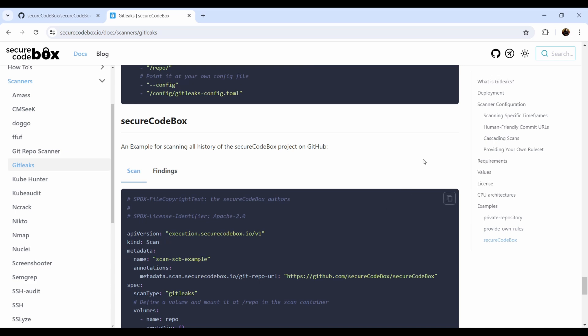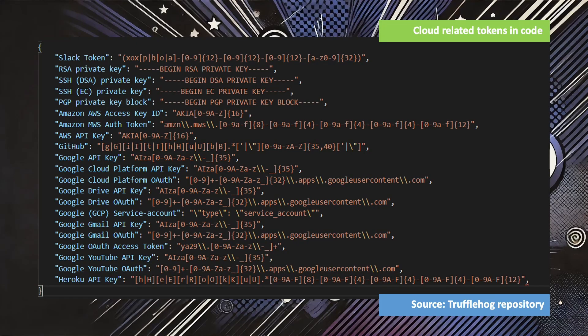What can actually be detected? These are cloud tokens in the code — you can see Slack tokens, RSA private keys, SSH keys, PGP keys, Amazon access keys, GitHub tokens, Google API keys, Heroku API keys, YouTube API keys, and various other access tokens. If you want to understand how these tools work, go to the TruffleHog repository and you will find a comprehensive list of regular expressions that identify specific token types.